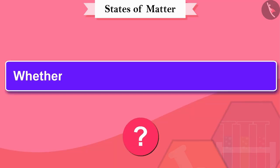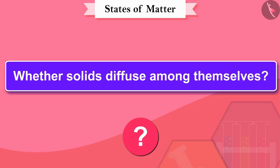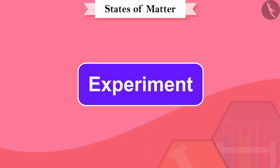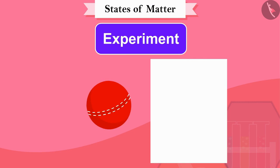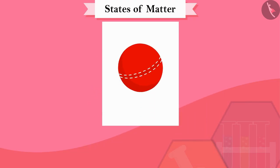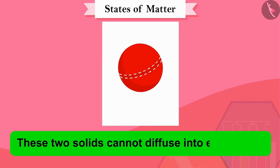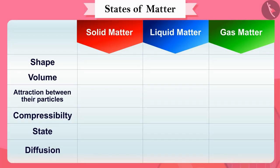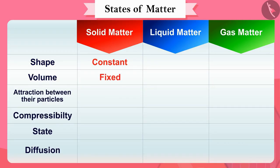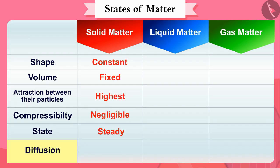Can you tell whether solids diffuse among themselves? Let's find this out through a fun experiment. We will need a paper and a ball. Try to mix the ball with the paper — these two solids cannot diffuse into each other. We have seen that the shape of solids is constant, volumes are fixed, attraction between particles is highest, compressibility is negligible, and two solids do not diffuse into each other.